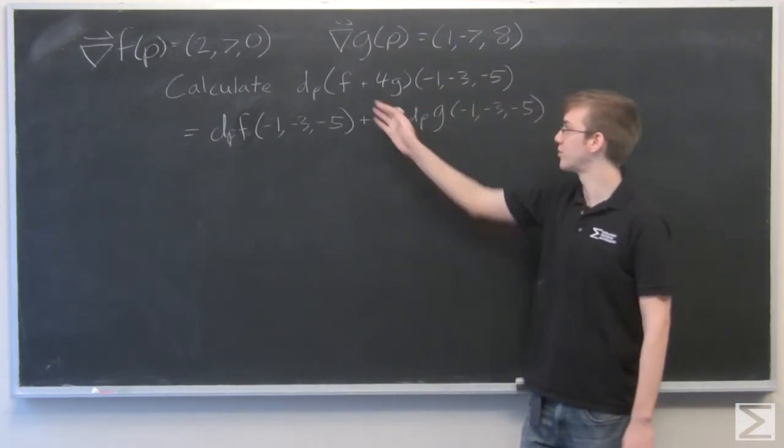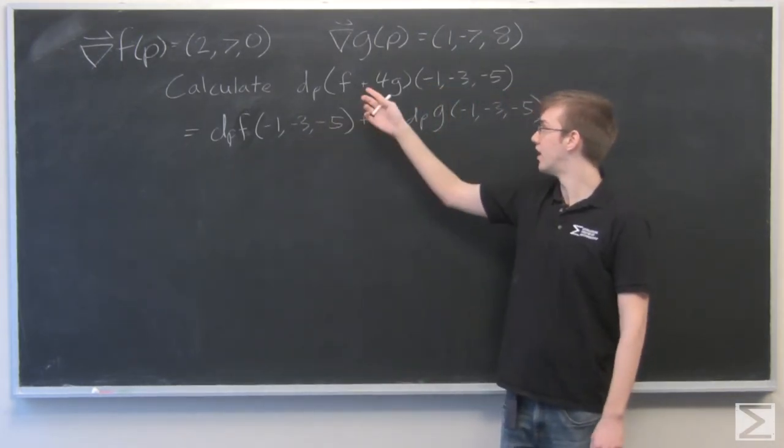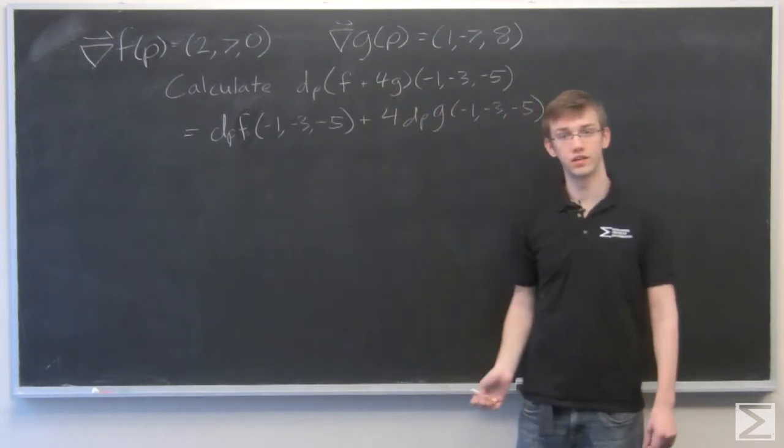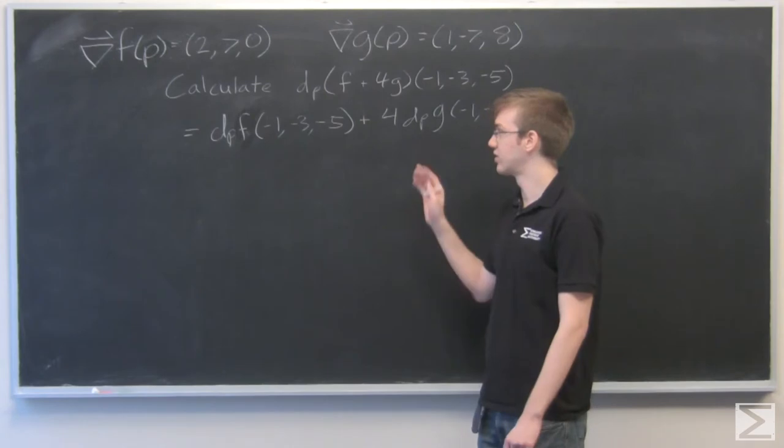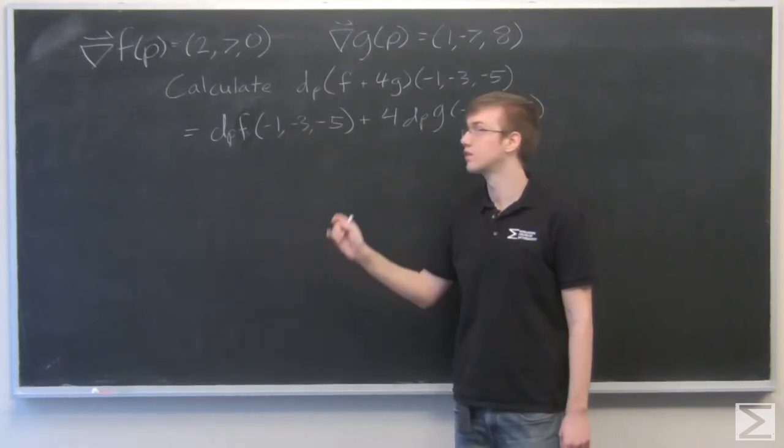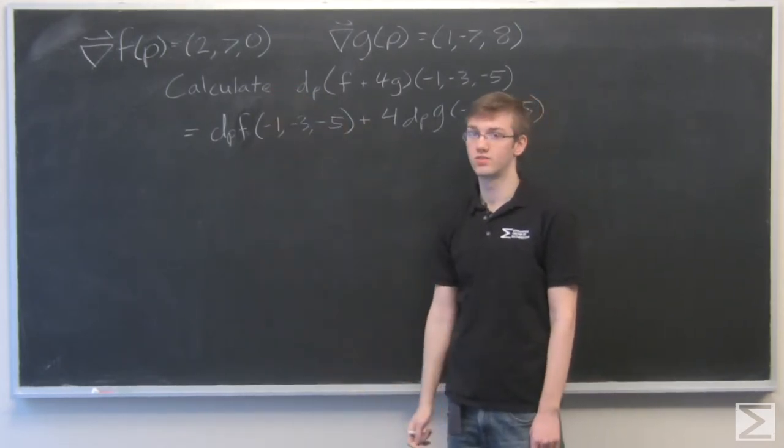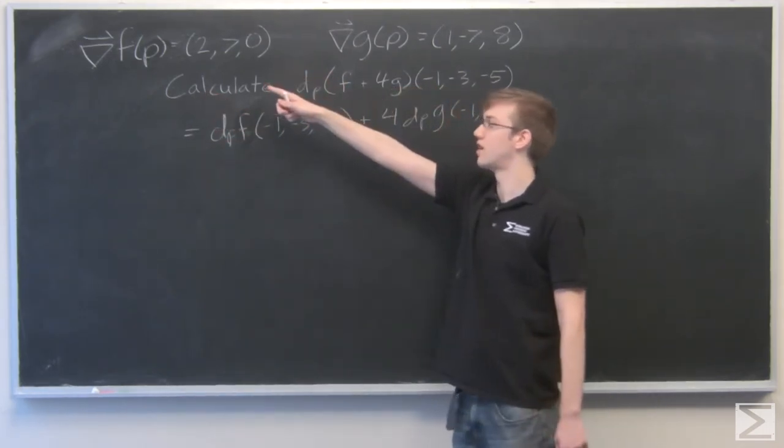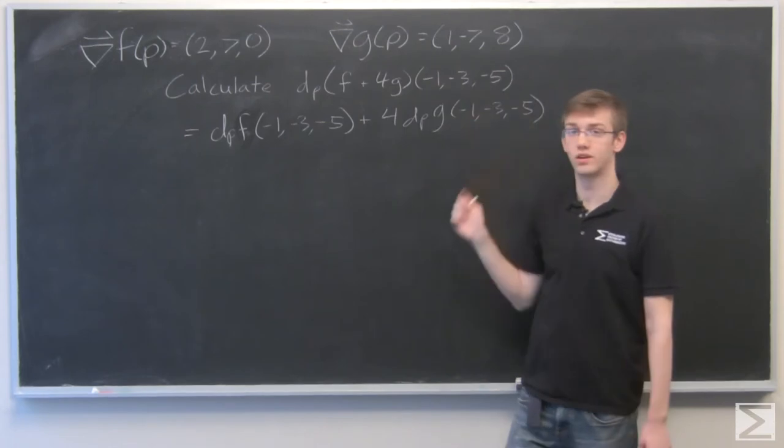So as you can see, we just separated this out, f and the g into separate terms with respect to negative 1, negative 3, negative 5. Now to calculate the total derivative with respect to p, we already have the gradient. And that's really all we need is the gradient with the dot product of the gradient with this vector right here.